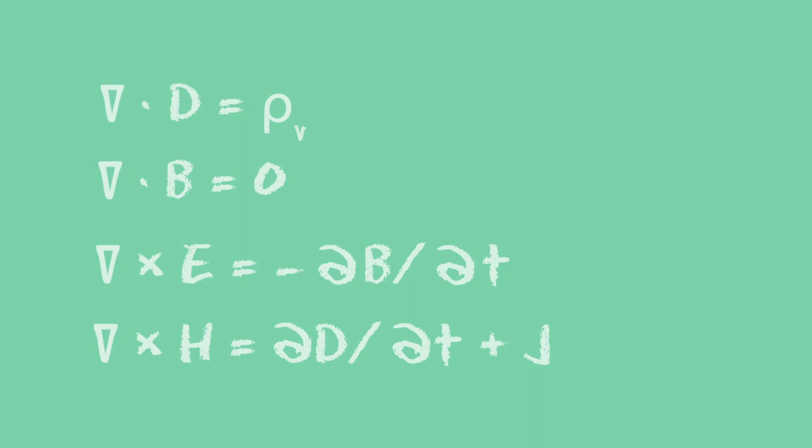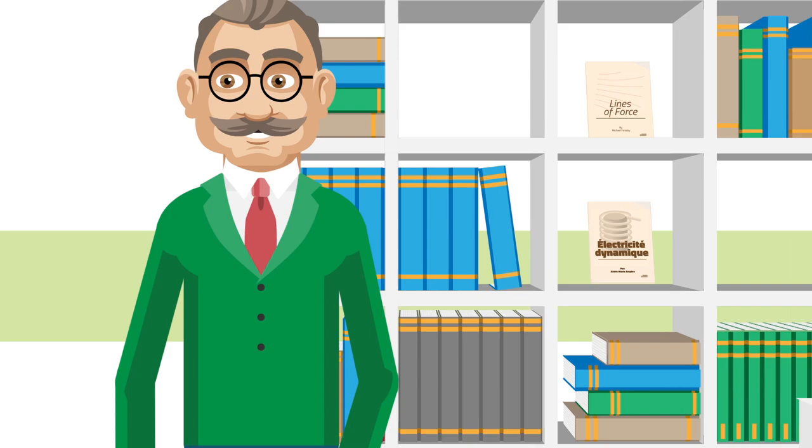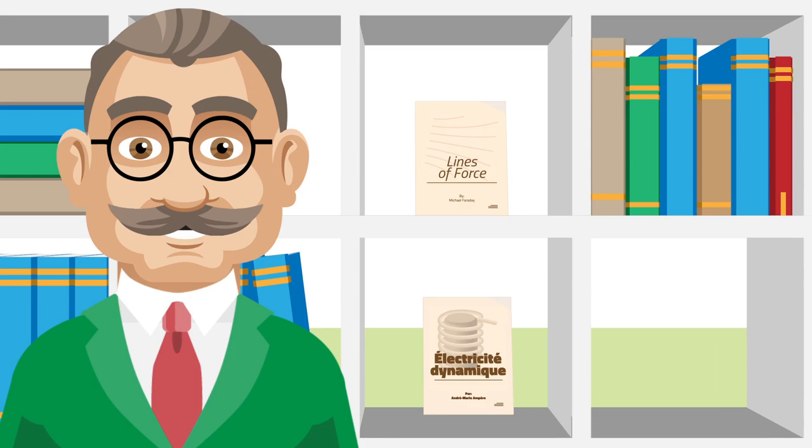Equation number four is known as Ampere's law and shows the relationship between electric and magnetic phenomena. A flow of moving charges through a conductor creates, in the space around the conductor, a magnetic field. Such a current can be treated as the source for that field, but also a displacement current through a capacitor can be a source.